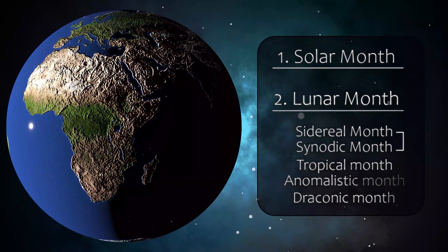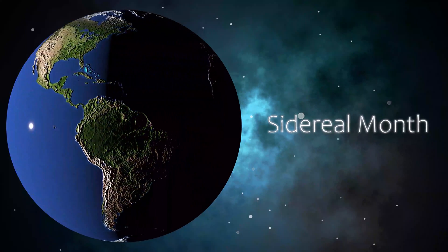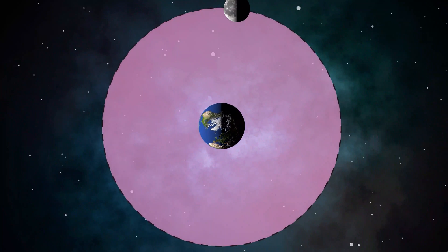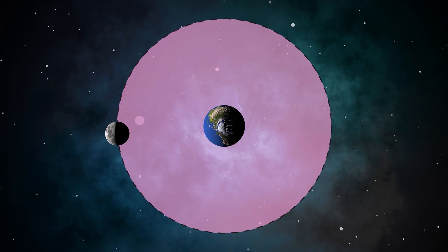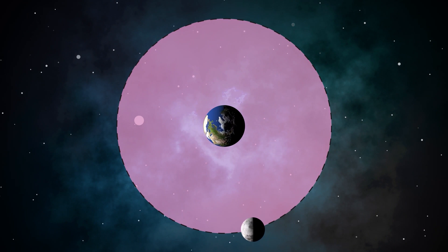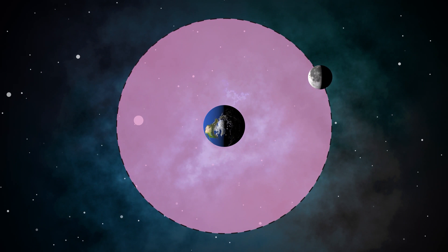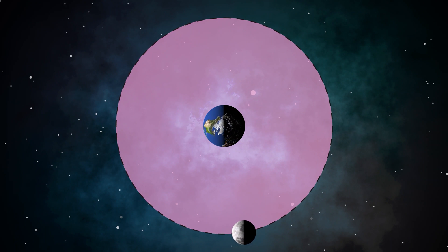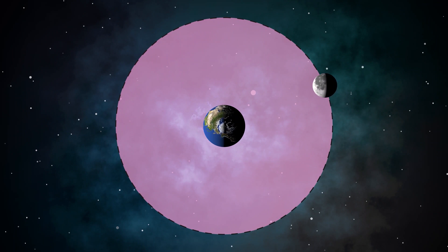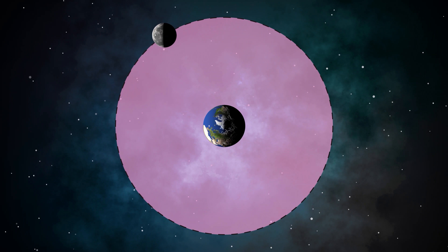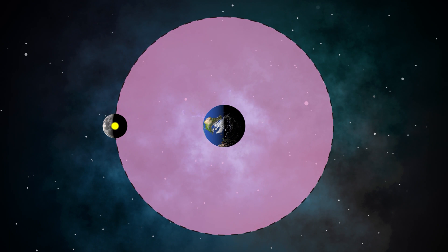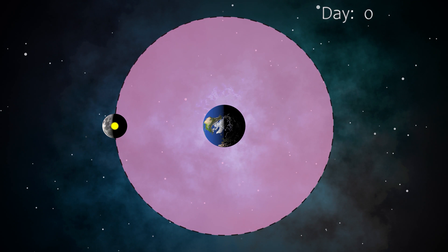Let's start with the sidereal month. Please note that this diagram is not to scale and proportions, but it will do for an easy and clear explanation. Now, sidereal month simply is the time taken by the moon to go around the earth once, that is to travel 360 degrees. Let's mark the initial position of the moon with this dot. Now let's track how many days the moon takes to go around the earth and return to the same position.